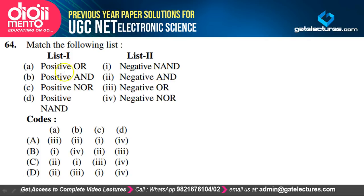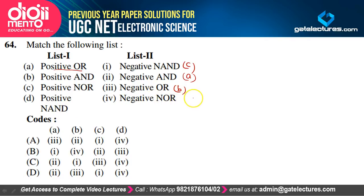Match logic equivalents: Positive OR = negative AND (A-2); Positive AND = negative OR (B-3); Positive NOR = negative NAND (C-1 or 4); Positive NAND = negative NOR (D-4). Option D is correct.